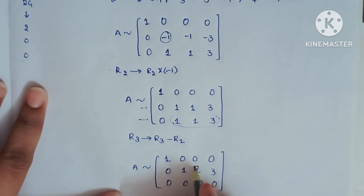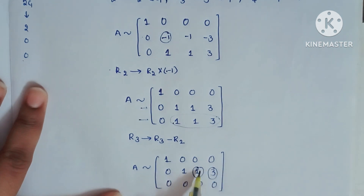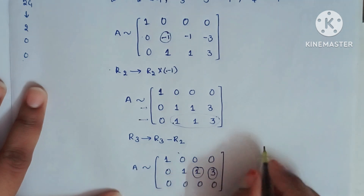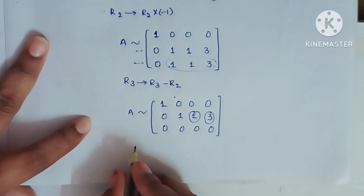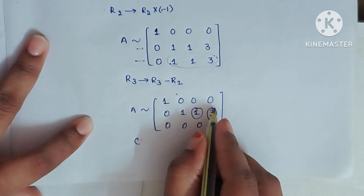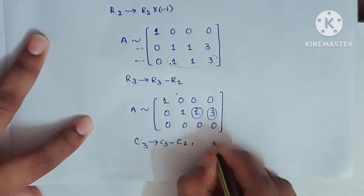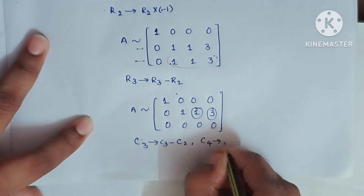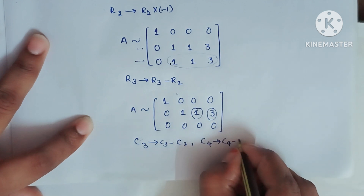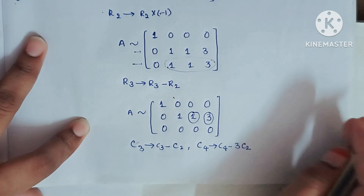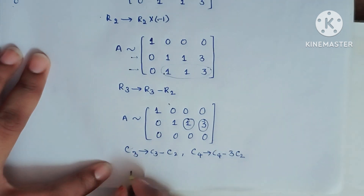Now we have to convert the elements to the right of the second pivot into 0 using column operations. Using C2, we convert two elements into 0. The operations are: C3 → C3 − C2 and C4 → C4 − 3×C2.